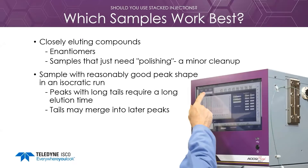Samples that work best for stacked injections include closely eluting peaks. Peaks with a lot of resolution can often be purified in a single injection just by increasing the load. Enantiomers are commonly run, but samples that just need a simple cleanup of a closely eluting impurity also benefit from stacked injections. Samples should have good peak shape with no fronting or tailing. Tailing is often caused when running ionizable compounds — try adding an additive to the co-solvent or try a different column.